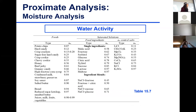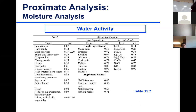There's a table from FDA that gives you a range of water activity for different types of foods, ranging from potato chips and rice candy all the way to ketchup, milk, and fruit, so you can see the different ranges. You can also see how to control water activity.